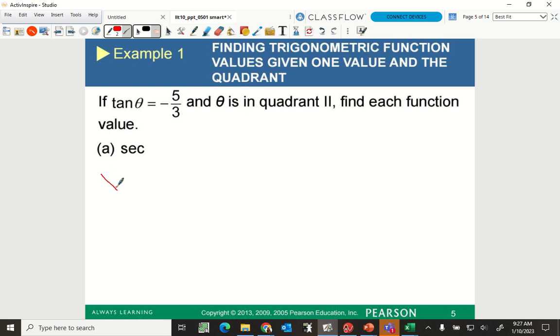Tangent is going to be y over x. And it says right here, theta is in quadrant two. If you want to look at your unit circle so you can remember this. Quadrant two, which value was negative in quadrant two? Which one is negative in quadrant two? The x value, right? The x value is negative in quadrant two.